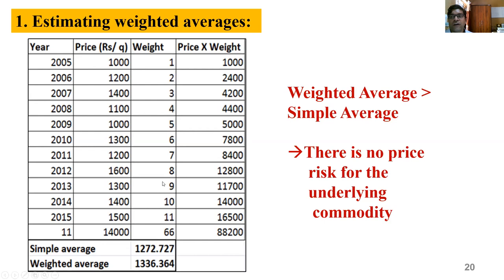Then we assign weights based on some rationality. As the year progresses, the weight increases — in 2005 the weight is 1, and in 2015 the weight is 11. The existing price in each year is multiplied by its weight. The summation gives 88,200. Dividing by the summation of weights gives the weighted average of 1336.36. So we have simple average (Σxi / n) and weighted average (Σ(Pi × Wi) / Σw). The weighted average of 1336 is more than the simple average of 1272, so there is no price risk for the underlying commodity.